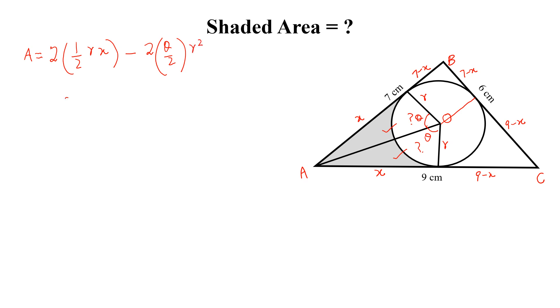How can we calculate R, X and theta? If we calculate these 3 values, then we are done. So, we know that 7 minus X plus 9 minus X equal to 6. If we simplify this, X equal to 5. So, this value is 5.